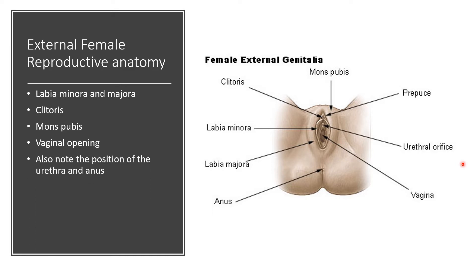Note the position of the urethra and anus. The vaginal opening is here; anterior to that, you see the urethral orifice, and the anus is very posterior. So you've got three openings: the urethral orifice where urine comes out, the vaginal orifice where a baby can come out if the woman is pregnant, and the anal orifice where feces exits.